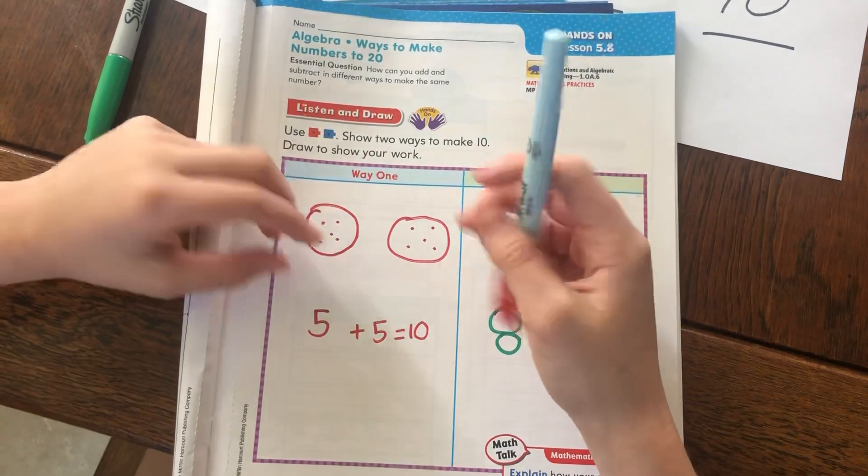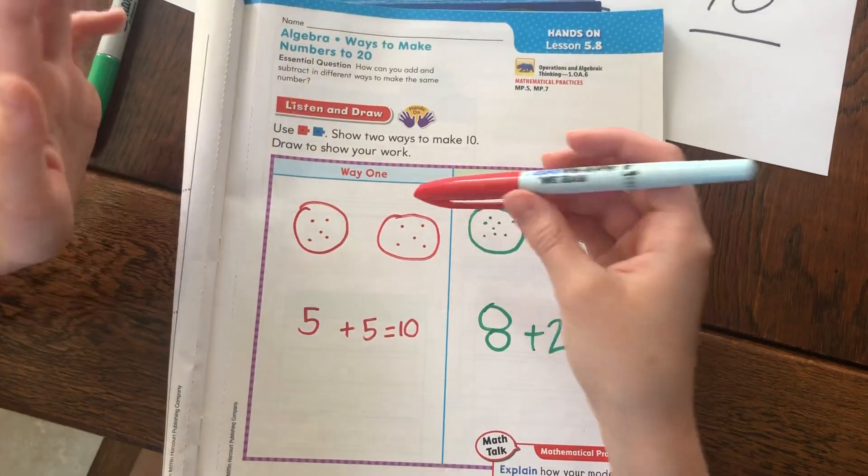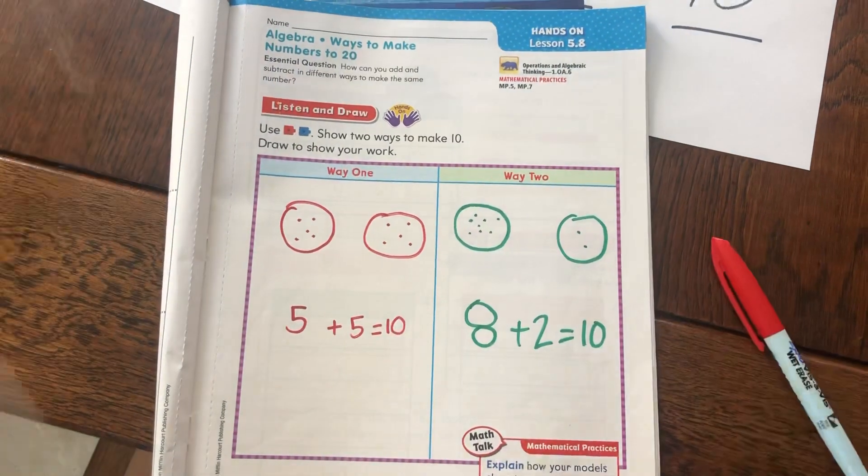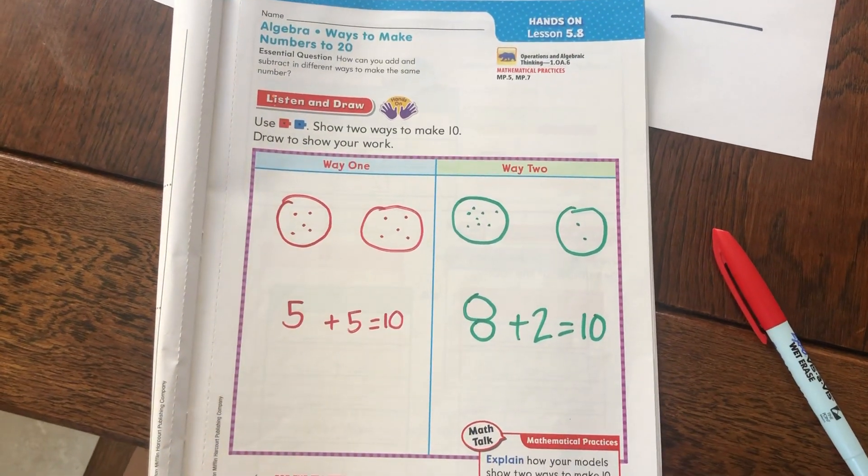And I know this because five and five is actually a double fact. And so it's easier because you just split the number in half.